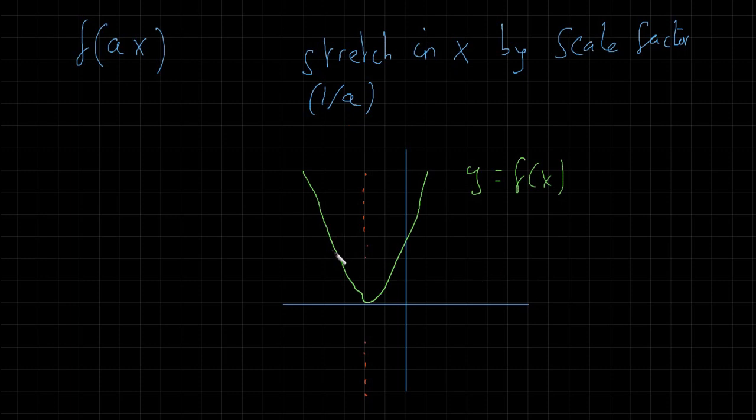So if this graph here is y equals f of x then what will happen when we make a equal to 2? So basically I've put this line here, the line of symmetry, just to show you the stretch in the x axis to make it easier for you. So let's have a look.